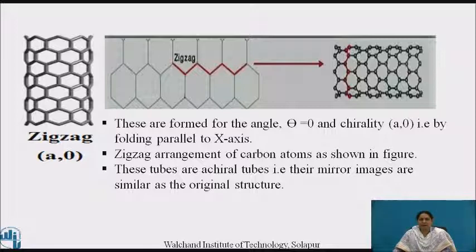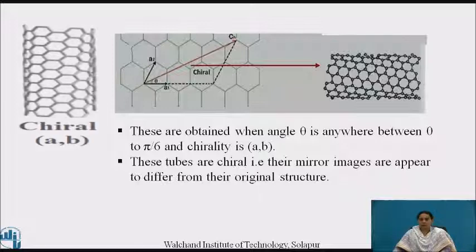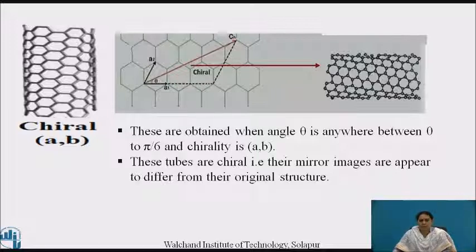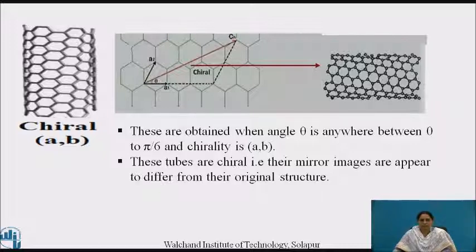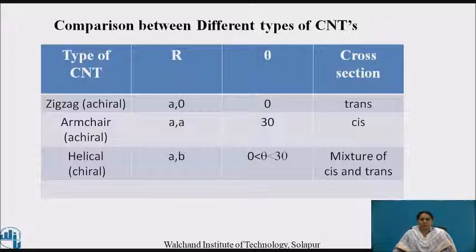Chiral tubes are those whose mirror images are similar to the original structure. The table shows a comparison between the different types of carbon nanotubes.